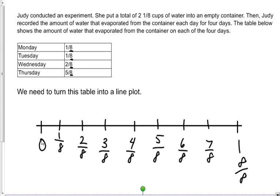Now, I'm going to label my line plot with the data we have from our table. So, Monday was one-eighth. I'm going to put a little X over one-eighth. Tuesday was one-eighth. I'm going to put another X to represent Tuesday on this line plot. Wednesday was two-eighths. I'm going to put an X over two-eighths so we can check off Wednesday. And Thursday was five-eighths, so I'm going to put an X over the five-eighths.